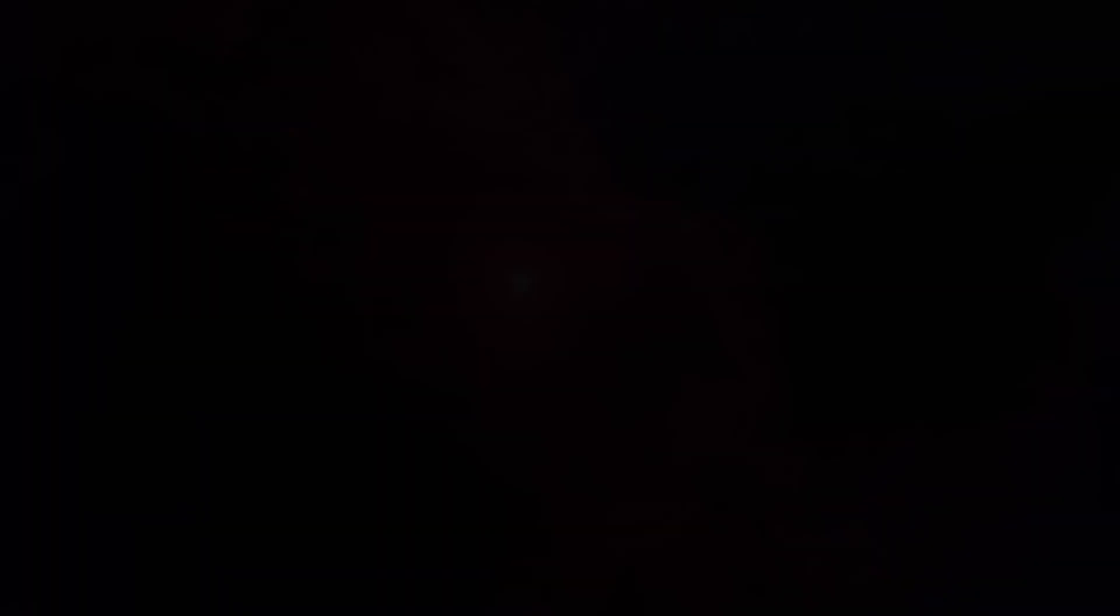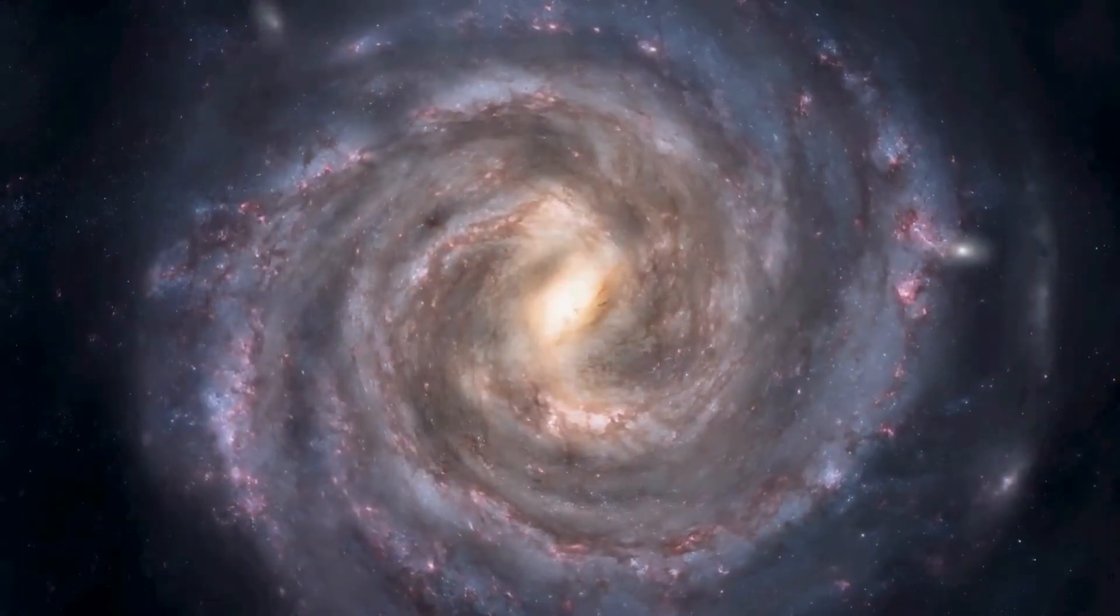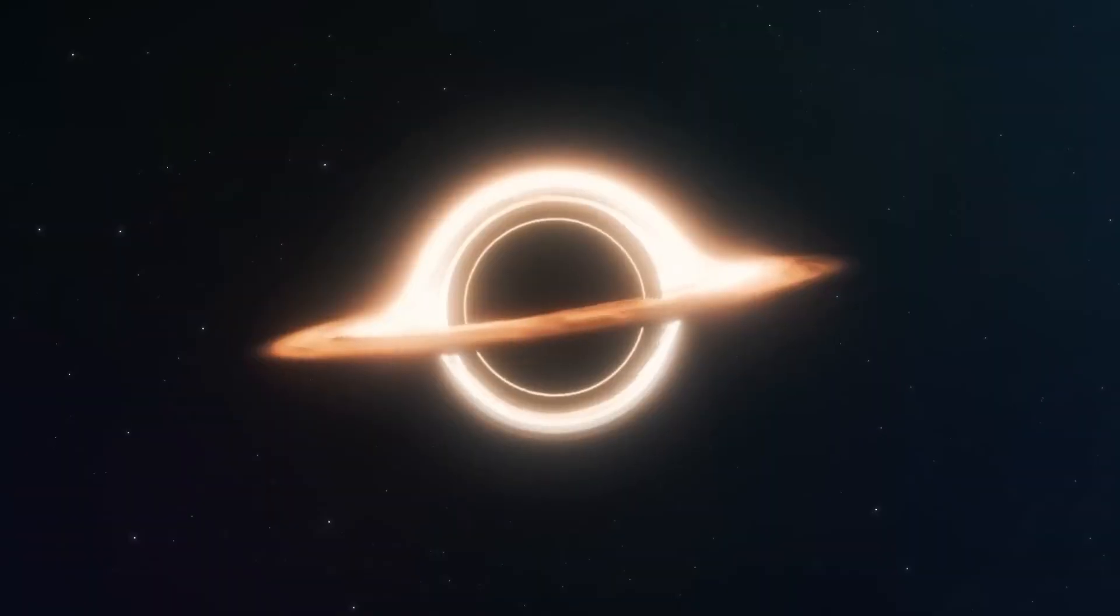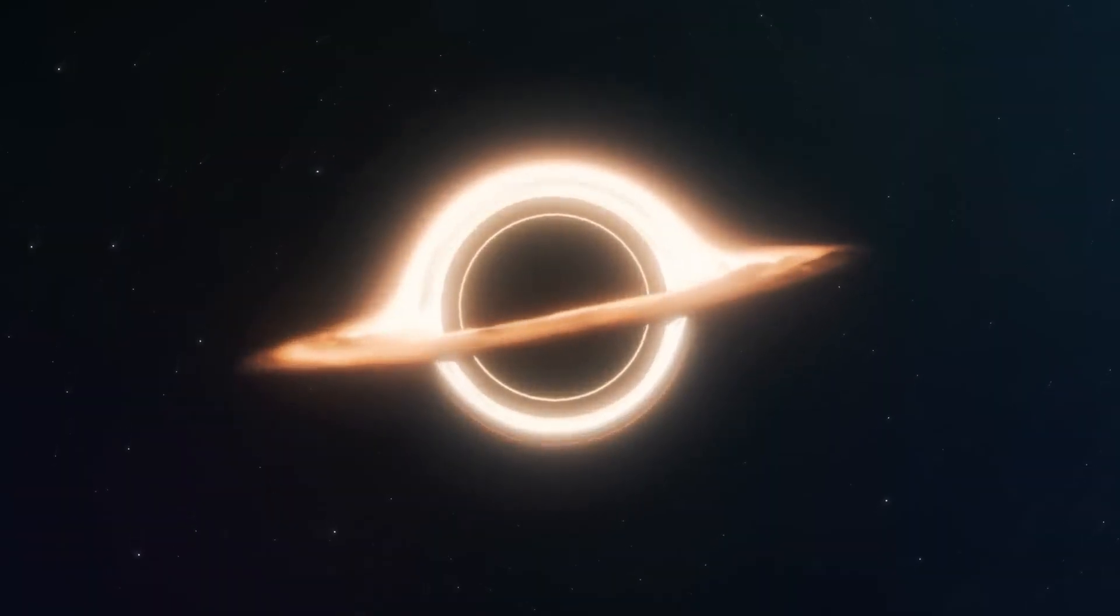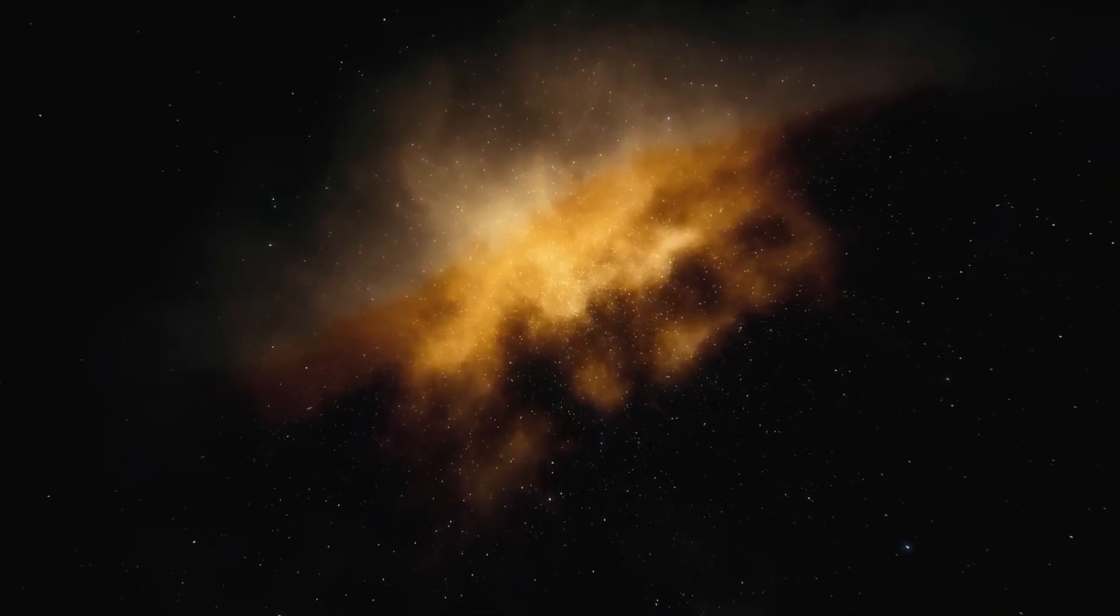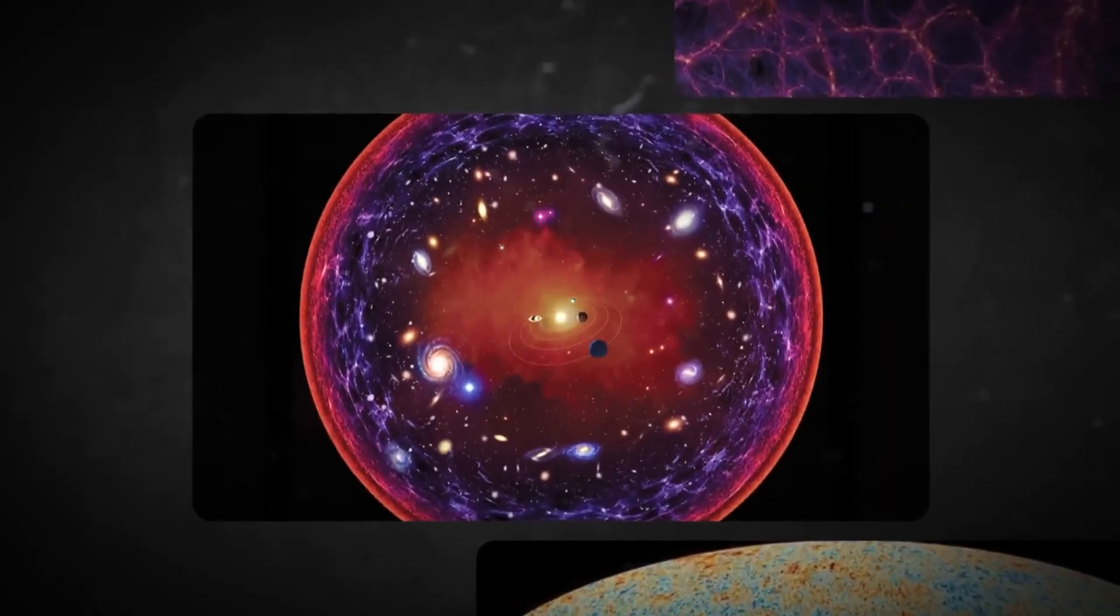Over countless years, these cosmic structures grew larger and more intricate, leading to the extraordinary diversity of objects and phenomena that we observe throughout the universe today. Despite the vastness of the universe, it is predominantly empty. To put it in perspective, if we scale down our entire solar system to the size of a quarter, the nearest star would still be the distance of two soccer fields away. And this is just within our Milky Way galaxy, which is one among billions in the observable universe.